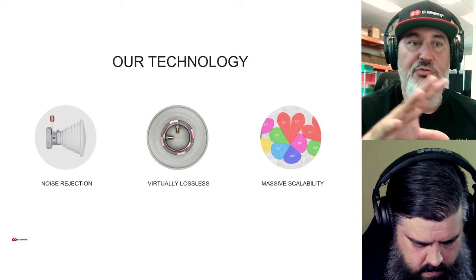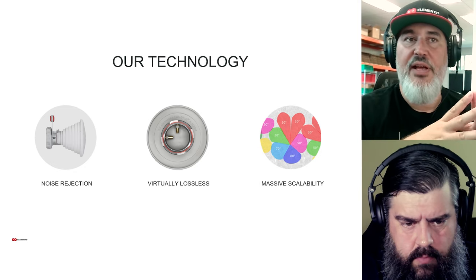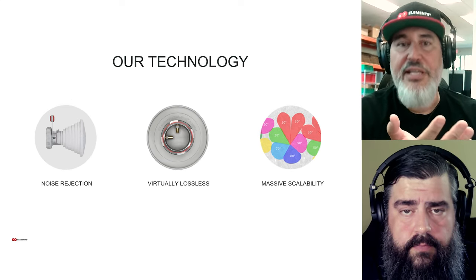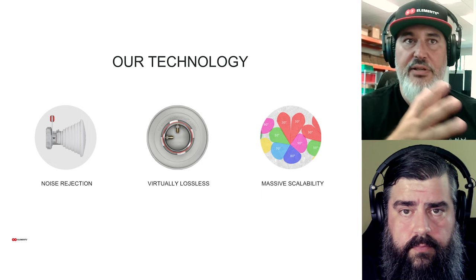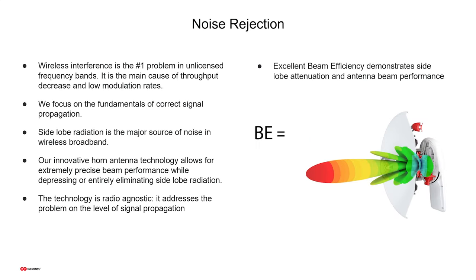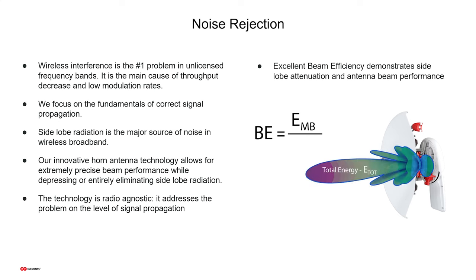RF Elements has always built its products based on three pillars: noise rejection — ensuring antennas have highly suppressed or non-existent side lobes; the waveguide twist port interface — virtually lossless, highly efficient for transmitting power; and massive scalability, because it's really important for WISPs to be able to grow over time. Noise and interference have always been an issue in 5 GHz and now moving into 6 GHz, so it's very important to have an antenna with high beam efficiency achieved by suppressing side lobes and keeping energy in the main beam only.